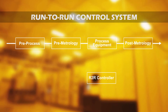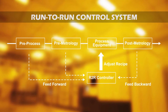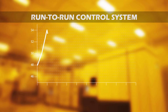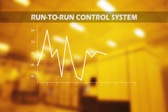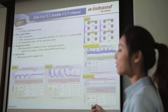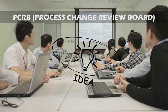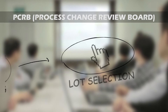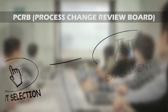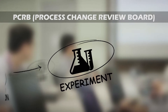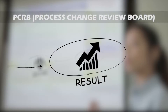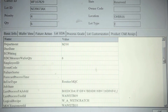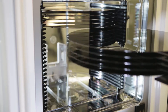To improve our process capability, we use run-to-run systems for many processes. This run-to-run system adjusts the recipe parameters to reflect the results of previous processing. Process changes have to go through a rigorous procedure, including design and review by the process change review board, lot selection, and experiment execution. Only changes that can demonstrate superior quality enter a final production release. WinBond's automated system handles experiment executions, experiment result reports, and production changes.